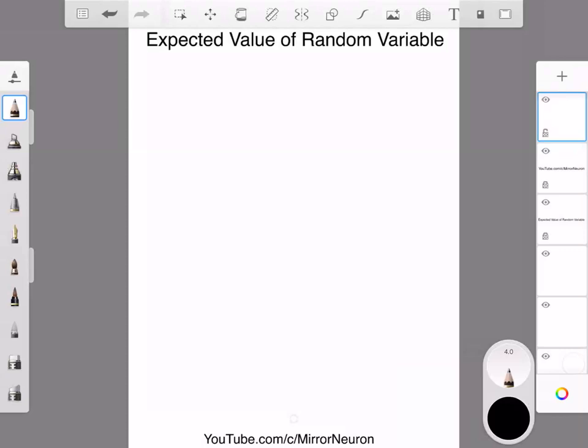So, in this example, we are going to consider a discrete random variable. Say for example, you want to start a new restaurant business, right?